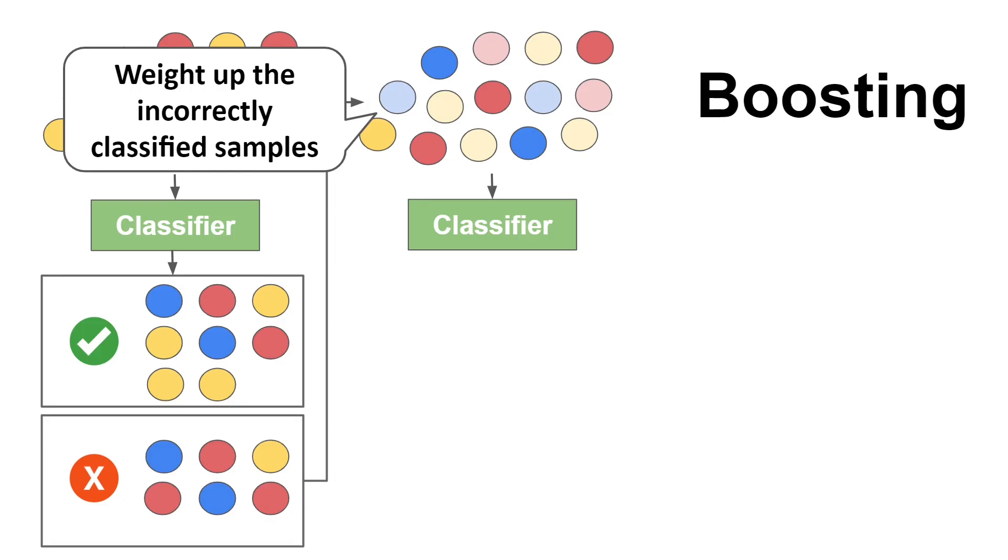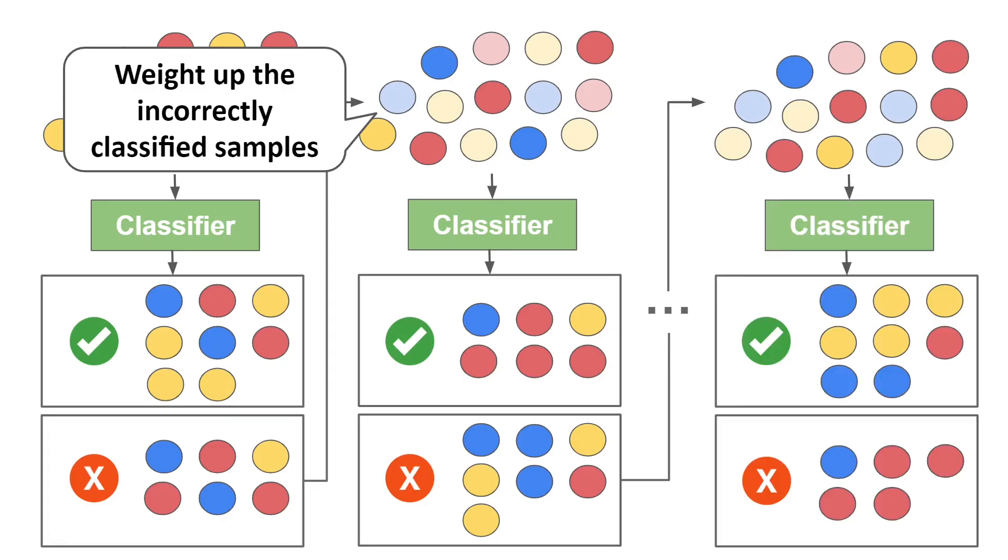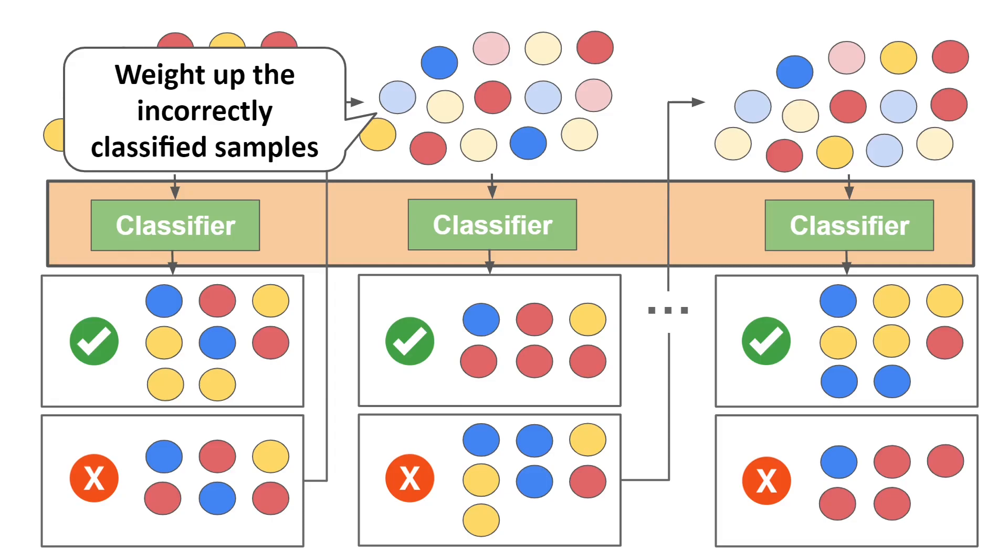Then you look again at the incorrectly classified samples, weigh them up, train a new model, look at its predictions, weigh up the misclassified samples, and so on and so on until you get the desired number of models. At the end, as in the bagging case, you use all these models in an ensemble to make predictions on new data.